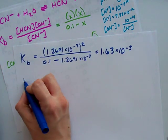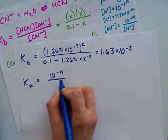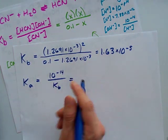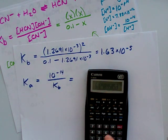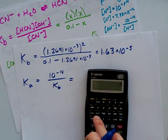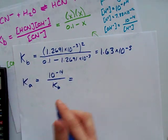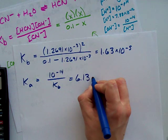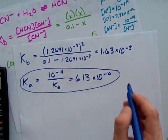I mean, really they asked for KA which is 10 to the negative 14 divided by KB. But that's no big deal. I'll just do that now. Divided by... 6.13 times 10 to the minus 10. And that's the KA for HCN.